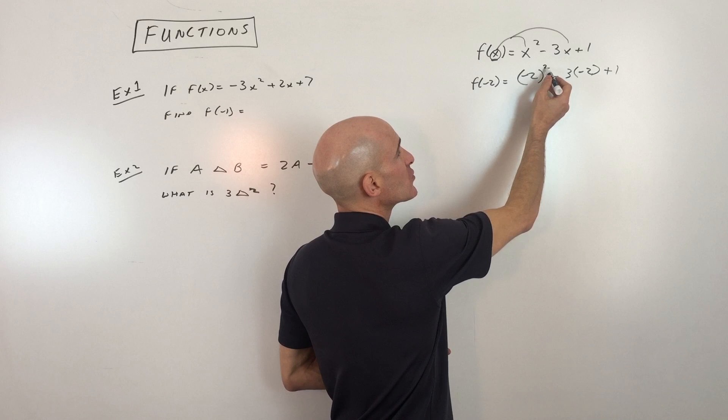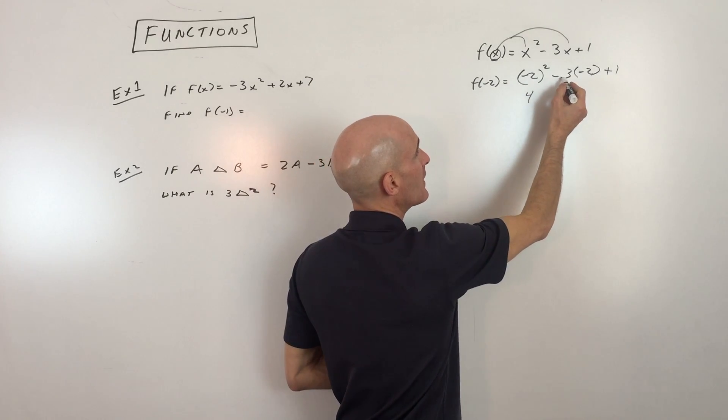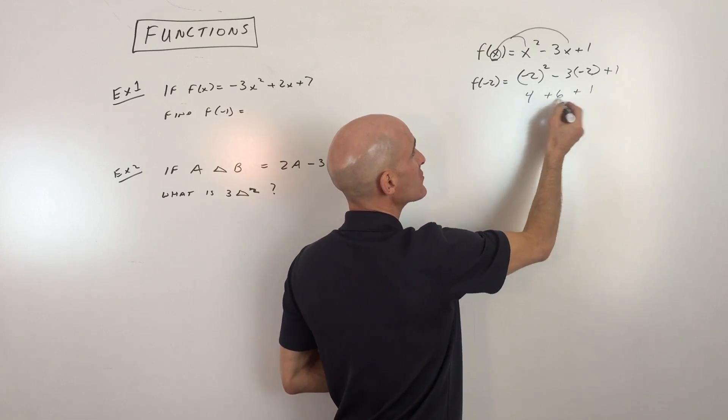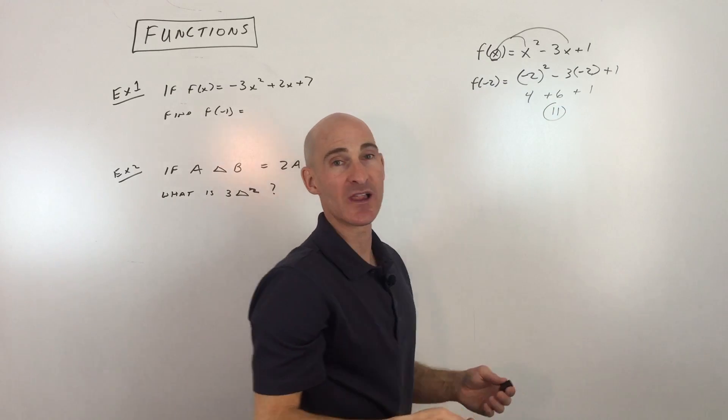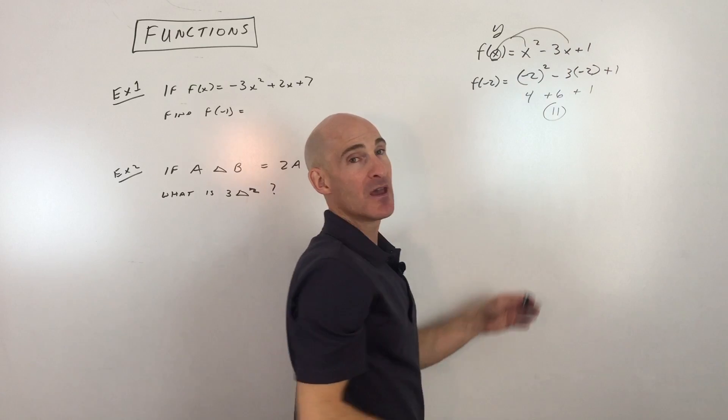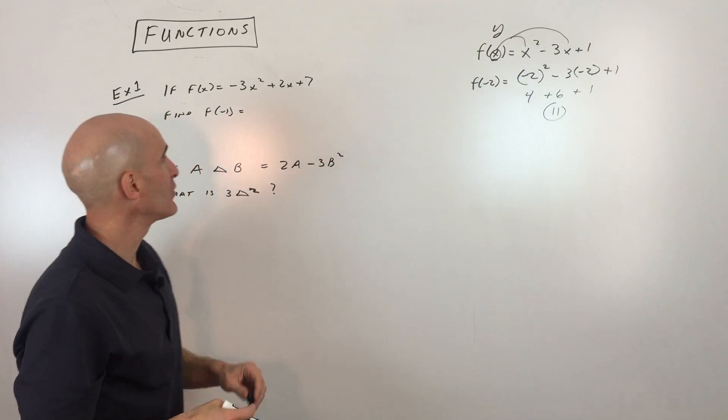So here we have a negative 2 squared. That means a negative 2 times a negative 2, so twice, that's positive 4. A negative 3 times a negative 2 is positive 6 plus 1 more, so that's going to be 11. So f of negative 2 equals 11. So it's just a different way of writing an equation. Instead of writing y equals, we write it as f of x or g of x or h of x. So let's look at a couple examples.